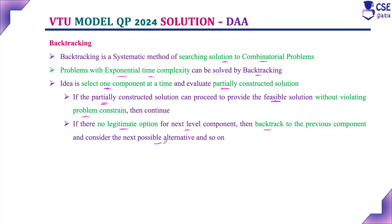In backtracking, either you will get a feasible solution or sometimes we cannot derive a solution at all. Once you get a feasible solution, you can stop. If the question asks to find all feasible solutions, you have to solve the complete problem and provide the complete solution. Otherwise, one feasible solution is enough. In exams, the subset sum problem is usually small, so try to provide all feasible solutions.